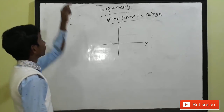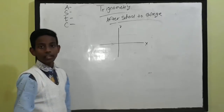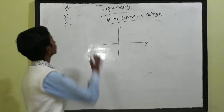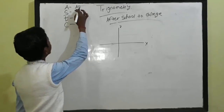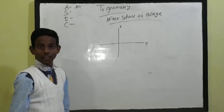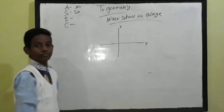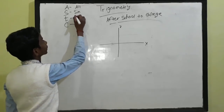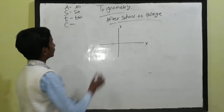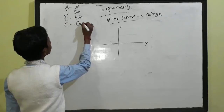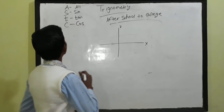Now we have to learn some words. From A, we write 'all.' From S, we write 'sin.' From T, we write 'tan.' And from C, we write 'cos.'